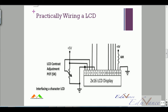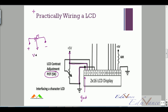Pin number one is connected to ground, and pin number two to power supply. Pin number three is connected to the center terminal of a potentiometer. A potentiometer is a variable resistor where you connect the two extreme terminals to plus and minus, and the center terminal gives a variable resistance — this controls the contrast.